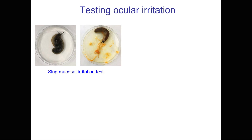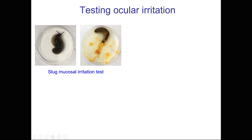We also need to perform toxicological testing for our formulations. For example, when developing eye drops, we need to test ocular irritation. One technique we use is an in vivo technique using slugs — slugs release mucus in response to irritation. When you place a slug on an irritant surface, you can see that it releases lots of yellow colored mucus. When the slug is on a safe surface, it does not release much mucus.